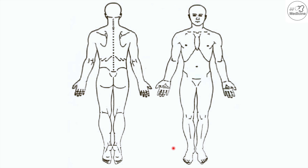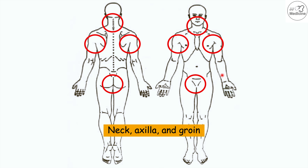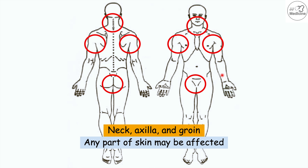Skin tags occur more in particular areas of the body. The most commonly affected areas are the neck, the axilla or armpits, and the groin or inguinal folds. Because they occur in these intertriginous areas — where two layers of skin rub against each other more frequently — this supports the theory that skin irritation is a potential trigger. Although these are the most common sites, any part of the skin may be affected.